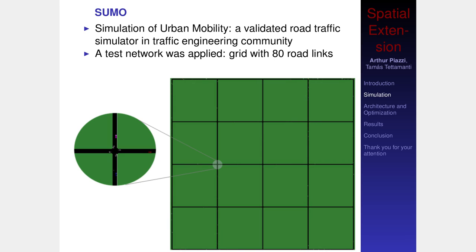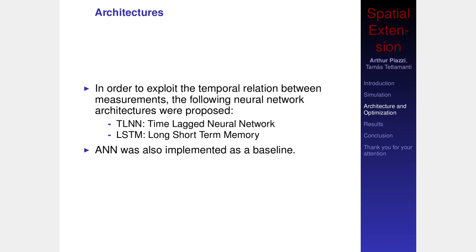To perform this, we are using a simulated environment with the SUMO software, testing it on a grid layout network containing eight links. We chose neural networks for this task — three architectures: the time-lagged neural network, the long short-term memory (LSTM) neural network, and a standard artificial neural network as a baseline, as this architecture was proposed in the literature.